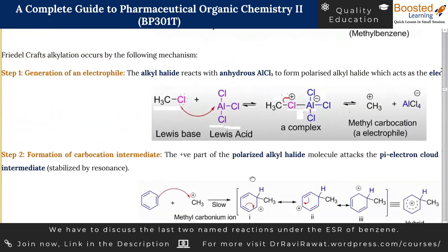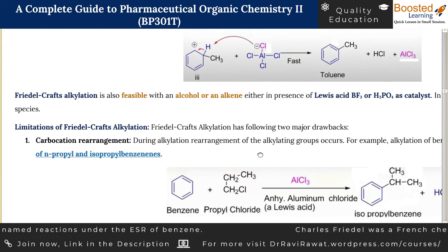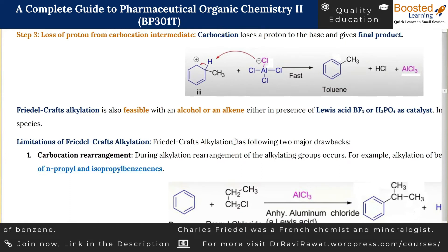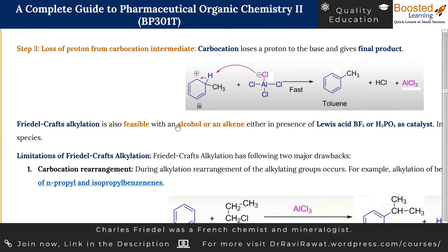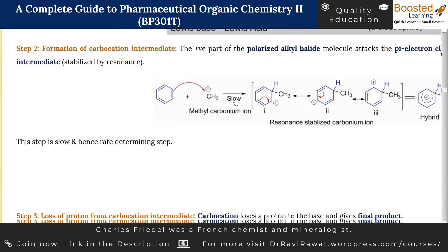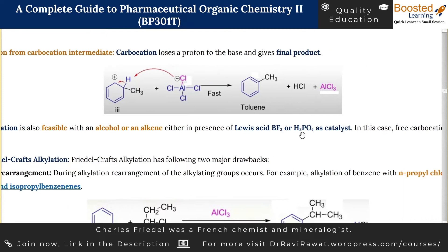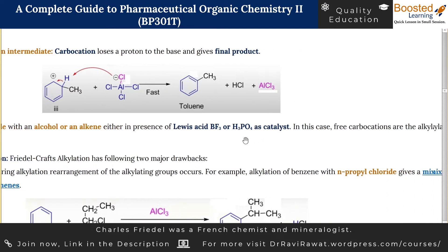The catalyst has been regenerated. This was the model reaction and mechanism of Friedel-Crafts alkylation. Some additional points: instead of alkyl halide, you can also use an alcohol (ROH) or an alkene. For example, instead of CH3Cl, you can use CH3OH. The Lewis acid used can be BF3 or AlCl3, and you can even use a Brønsted acid such as H3PO4.